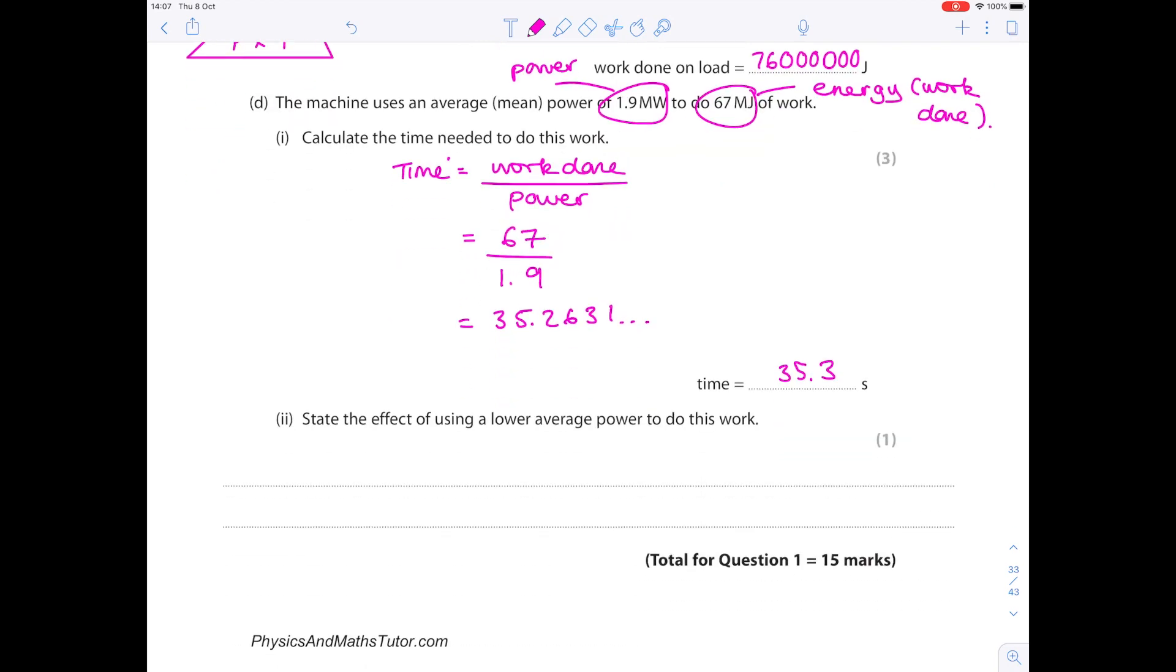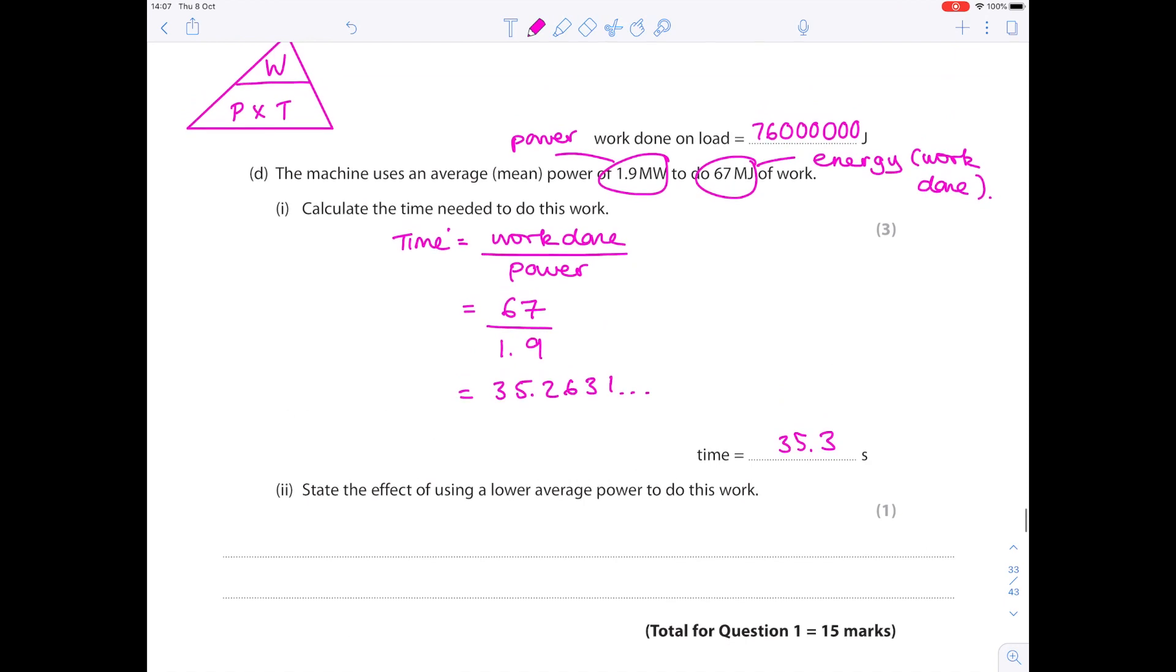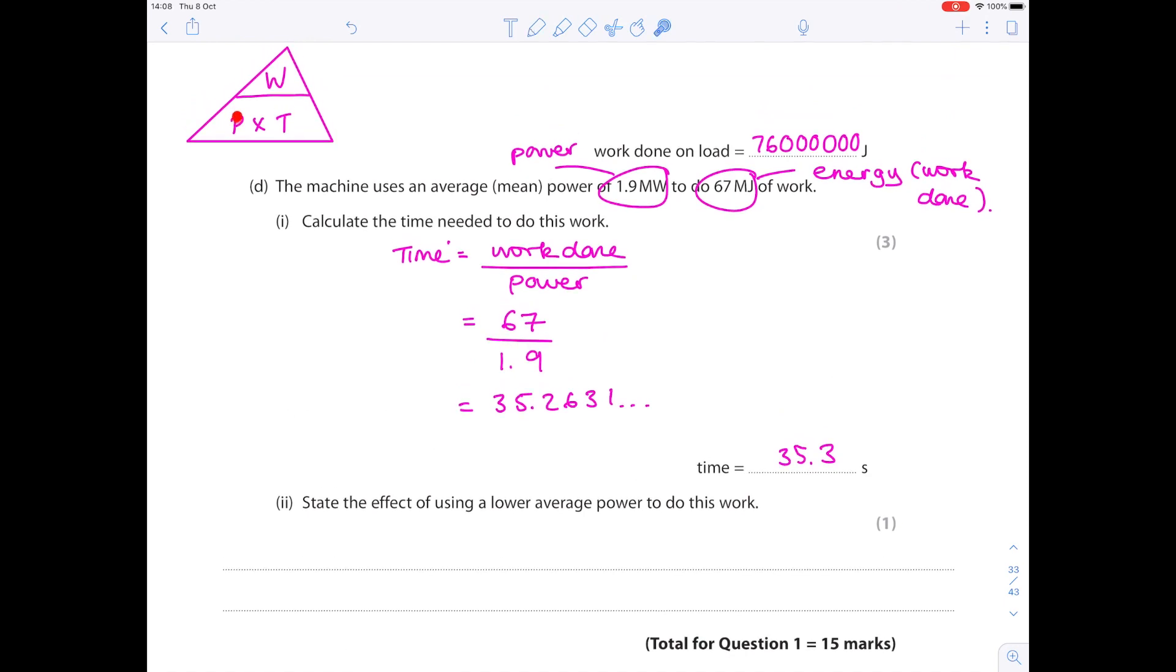State the effect of using a lower average power to do this work. So check your equation here. If we reduce the power, we know that the work done is the same. So how do we keep that number being the same if this number is less? Well the time will increase. So just state here that the time taken is longer.